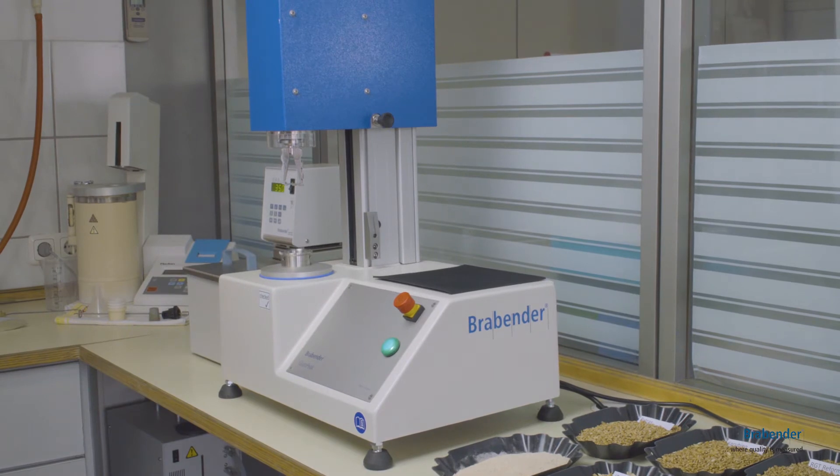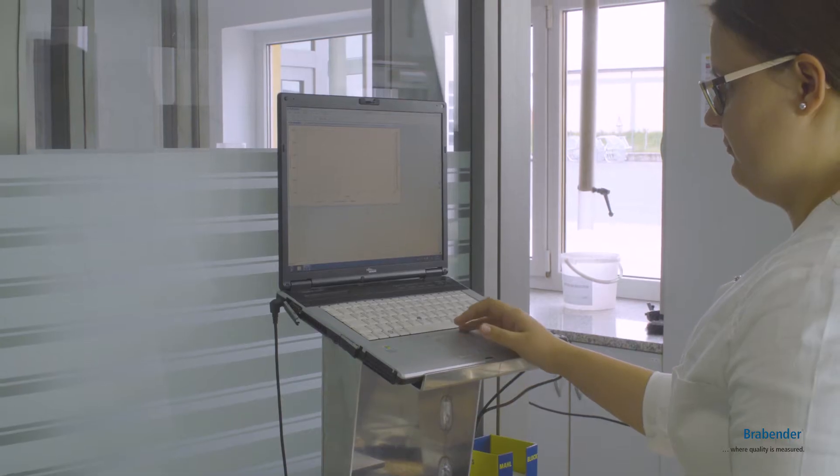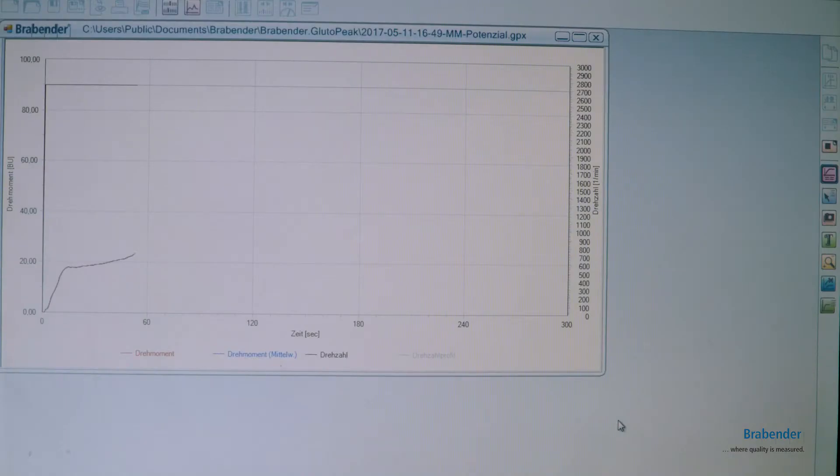The change in consistency of the sample is measured as a torsional moment and portrayed graphically as a curve, resulting in a rheological fingerprint of the analyzed flour. This allows conclusions about the glutinous quality and its specific functionalities.